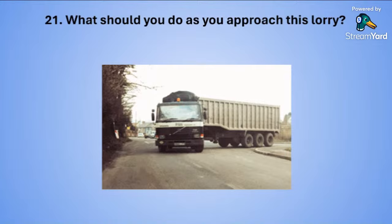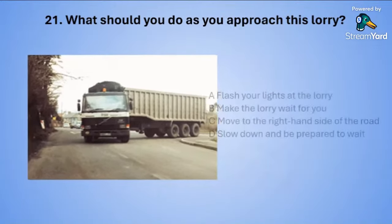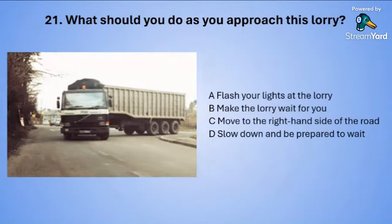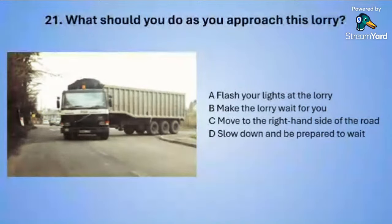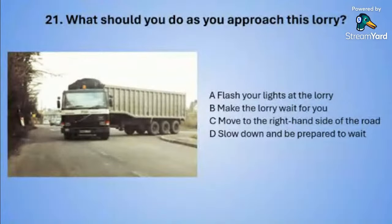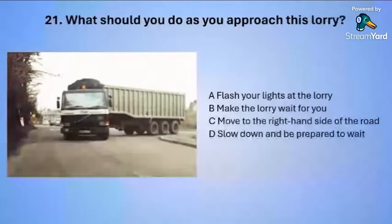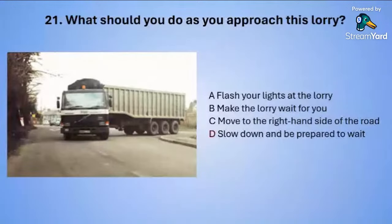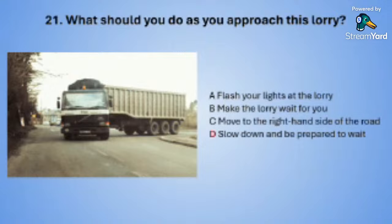Question number twenty-one: What should you do as you approach the lorry in this photo? A: flash your lights at the lorry. B: make the lorry wait for you. C: move to the right-hand side of the road. Or D: slow down and be prepared to wait. The correct answer is D — slow down and be prepared to wait.